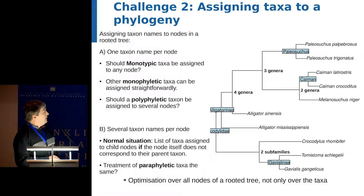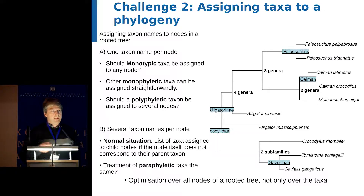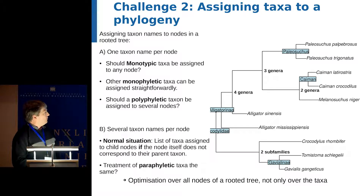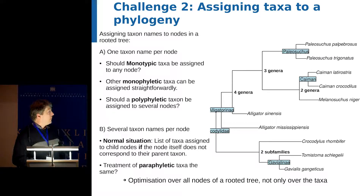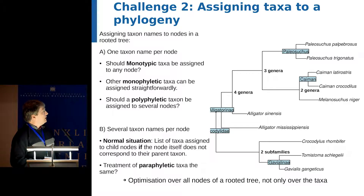Similarly, what should we do with monotypic taxa? This must also be solved, otherwise we run into the problem of measuring things twice. A polyphyletic taxon will most likely be assigned to many nodes — which is trivial, but can lower the estimated boundary because the algorithm treats it as many distinct taxa. Similarly, paraphyletic taxa cannot be assigned to a single node alone, but this can also be solved algorithmically.